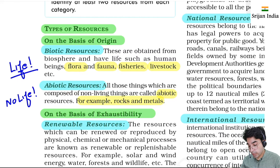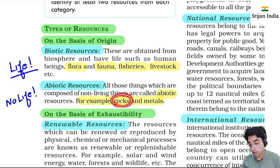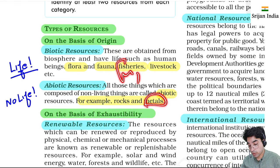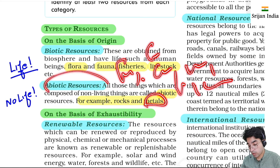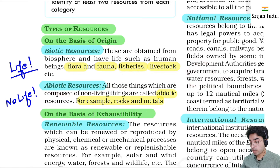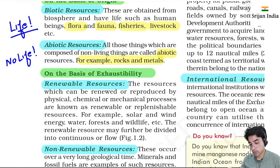Abiotic resources have no life - they are non-living things like rocks, metals, iron reserves, copper, manganese, magnesium, uranium. These are all called abiotic resources.